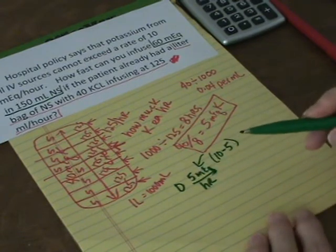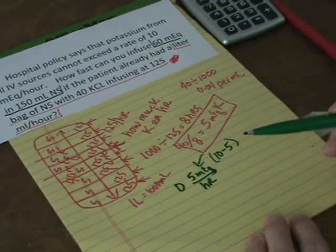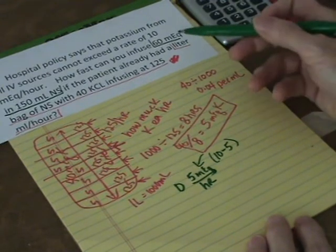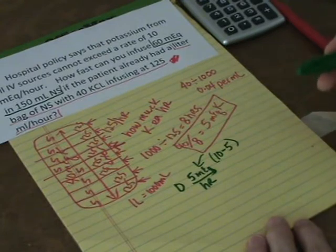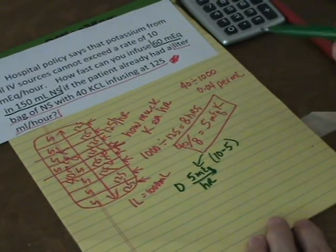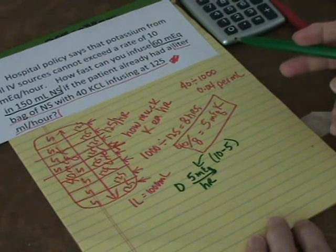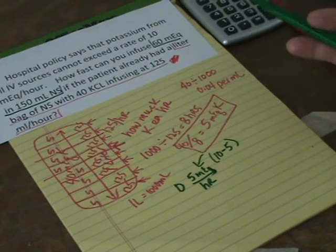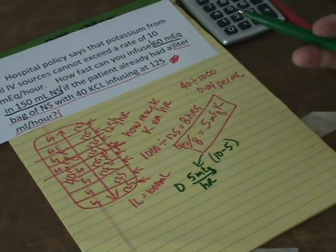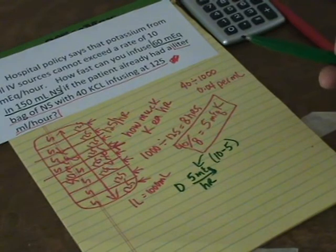Notice, this is a perfect example of why I like to use the word desired rather than ordered. Because what's ordered is 60 milliequivalents of potassium in 150 mils. And you may not have a rate ordered or the physician may say, run it in at 10 milliequivalents an hour. But you know that by policy, you can't do it that fast. And the physician, when he wrote that order, may not have been thinking of the fact that the patient already had potassium going. Certainly, you can call him and make him, but he's going to go, why didn't you just figure that out? He may not say it, but he'll certainly think it.